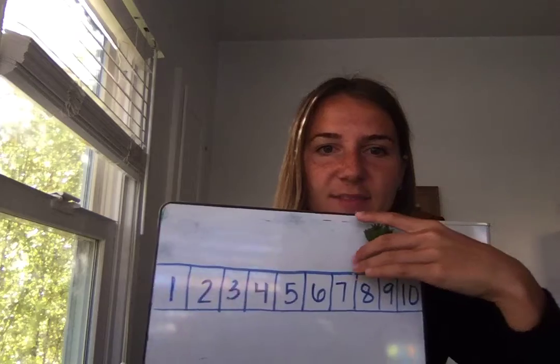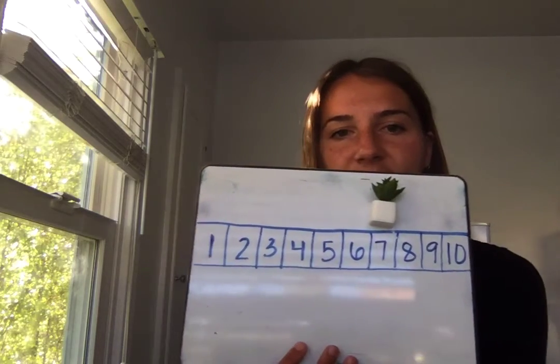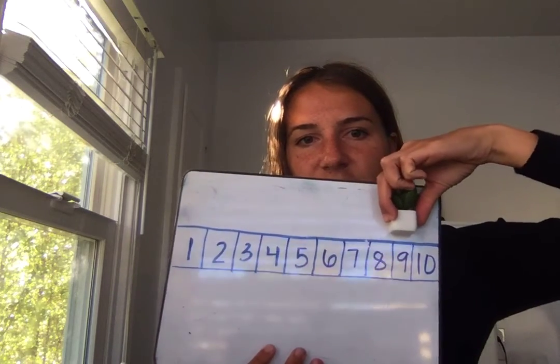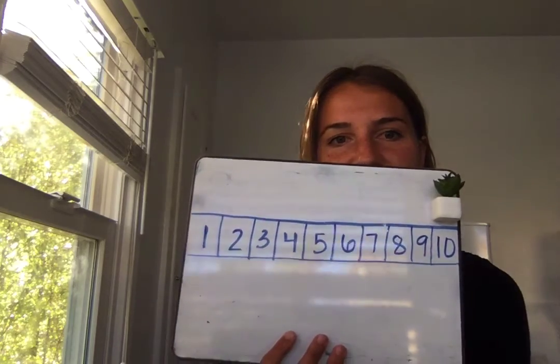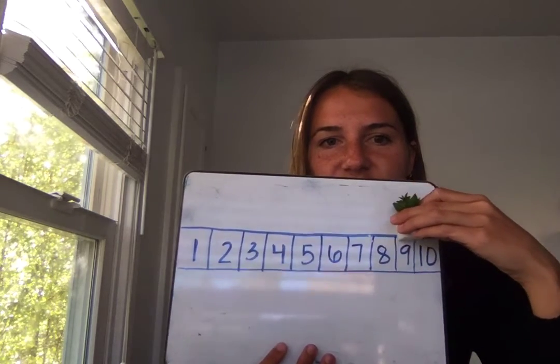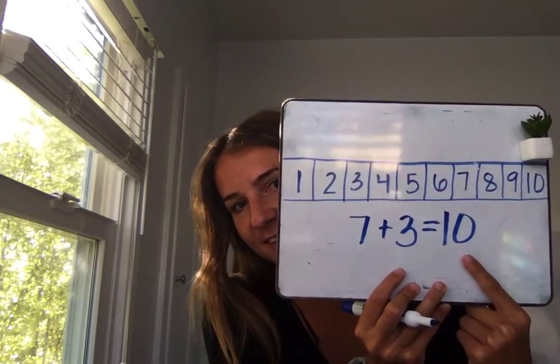Let's try a couple more where you write the number sentences on your own, just for practice with the number path. This time I want my little succulent to start on number seven and add three — one, two, three. Can you write me a number sentence about that? Seven plus three — one, two, three spaces — go ahead and try that on your board. Seven plus three equals ten. Very good, you guys.